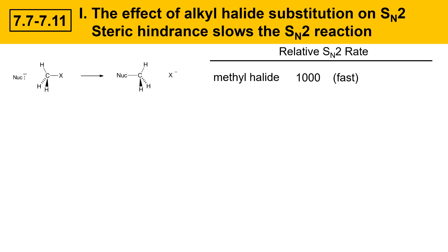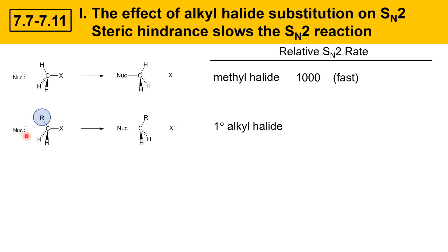Comparing that to other substitution patterns: with a primary alkyl halide, there is now one R group. That R group provides some steric hindrance — it effectively blocks the nucleophile to some extent, making it harder to reach the carbon and form a bond. That steric hindrance slows down the SN2 reaction a fair bit. The relative rate for a primary alkyl halide is about 50, so it's quite a bit slower than for a methyl halide.